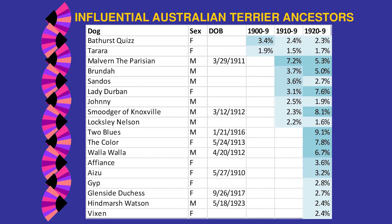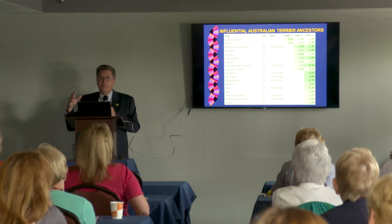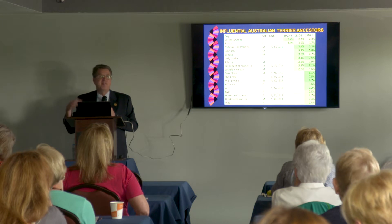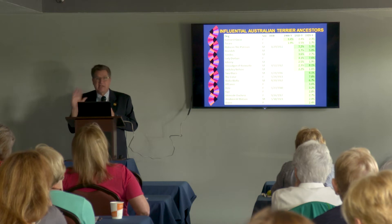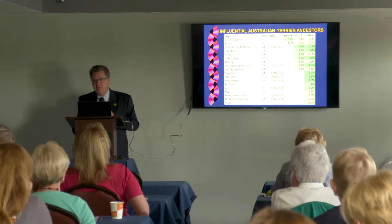In the 1920s, these same dogs increase their influence. Lady Durbin more than doubled her influence on the breed; Smoodrew of Knoxville almost quadrupled his influence. People are starting to linebreed on these dogs because they're producing quality — that's why dogs get more influential. It's not because they're popular sires; it's because what they produce and what their offspring produce is of quality. If that line stops producing quality, the influence goes down.